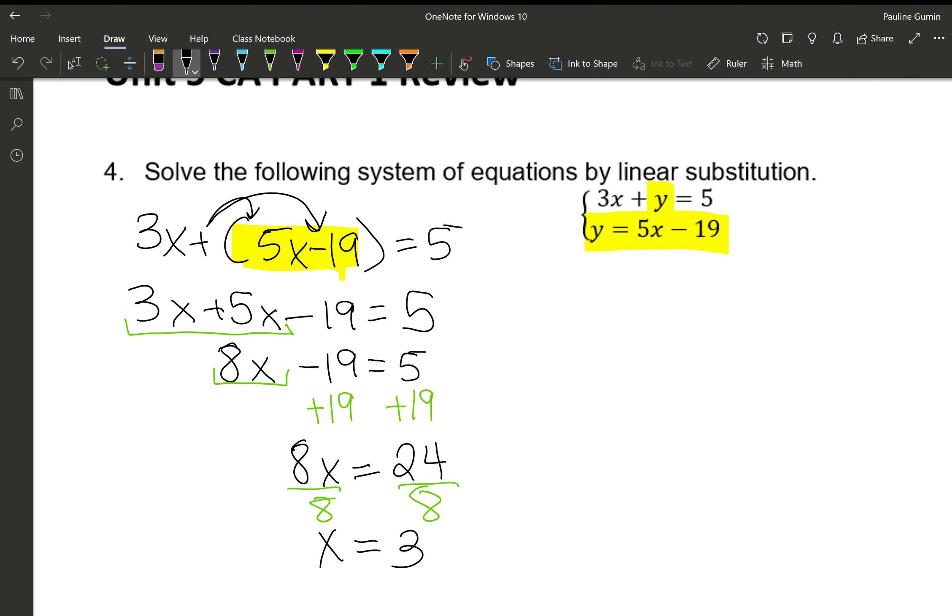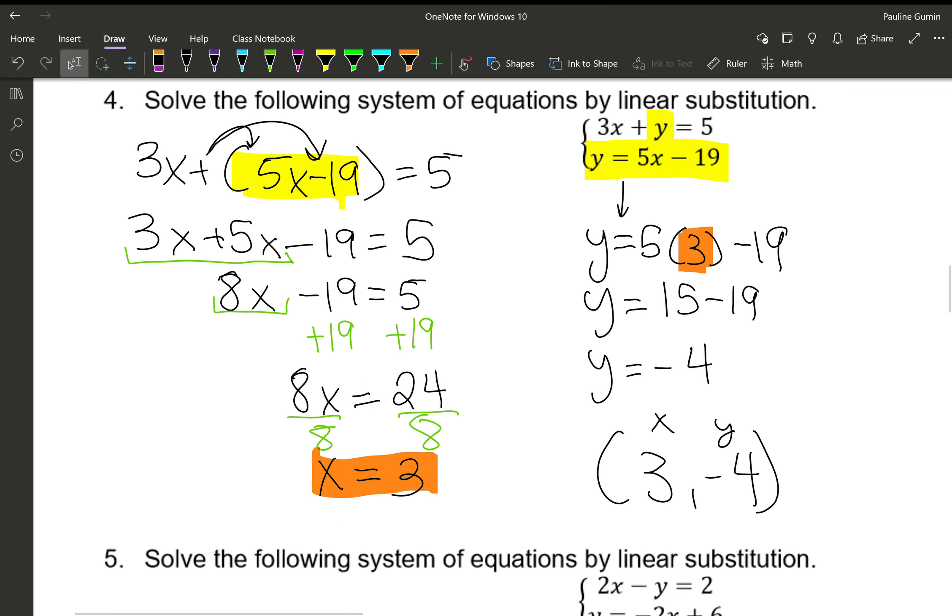Now that we found X, we need to find Y as well. And I'm going to use this handy Y equals equation. So I found that X equals 3. So instead of 5X minus 19, I'm going to have 5 times 3 minus 19. 5 times 3 is 15. And 15 minus 19 is negative 4. And don't forget to write your answer in coordinate form. X comma Y, 3 comma negative 4.